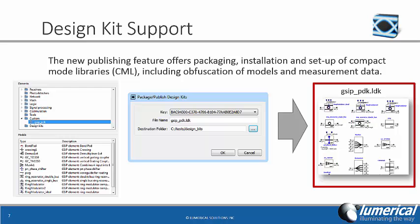Also in Interconnect, the new design kits are logical groupings of files related to a set of calibrated compact models or a compact model library. The design kit structure is self-contained to provide easy transfer between different users or computer platforms. All elements needed by Interconnect are stored within the compact model library. In this screenshot, we see a number of elements included in the GZIP PDK — these can be published into a single design kit and distributed to users in a convenient manner.